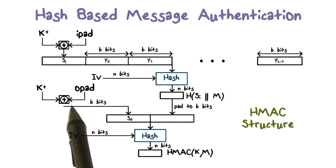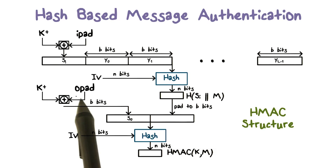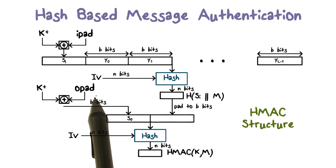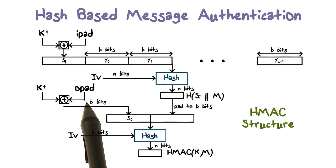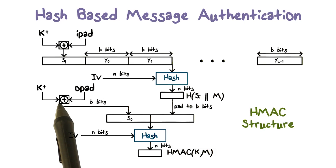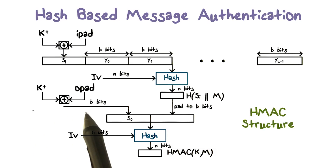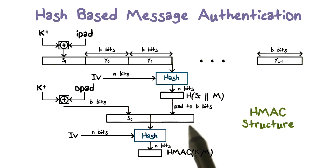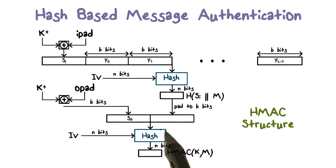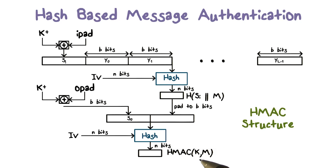Then the padded key K+ is XORed with opad. Again, opad is another constant designed to eliminate regularities in the key. The result is a B-bit value S0. The padded hash is then appended to S0 and the entire message is hashed, and the N-bit result is the HMAC of the message with key K.